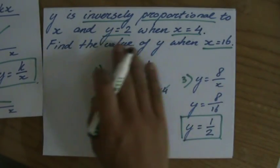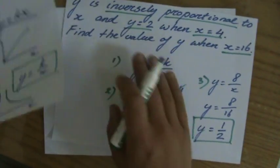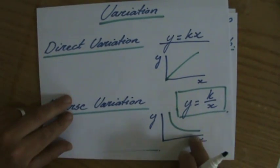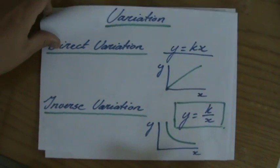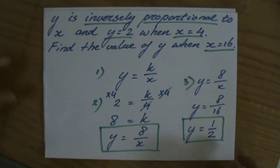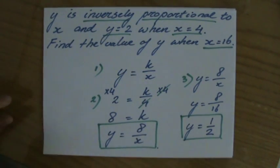When x is 4, y was 2. So, the smaller x is, the higher the value for y, inverse variation. Now let's go to the next video for another example.